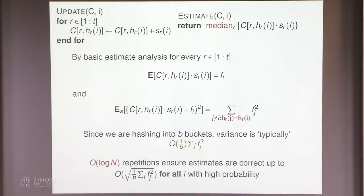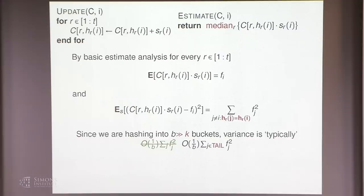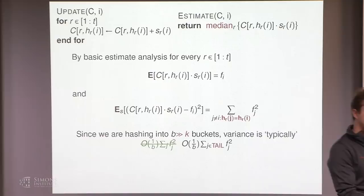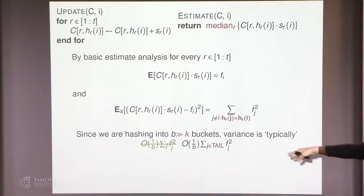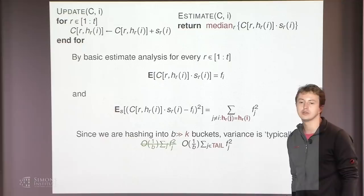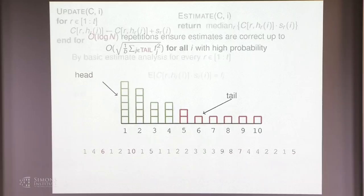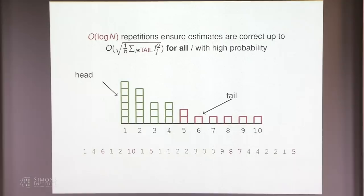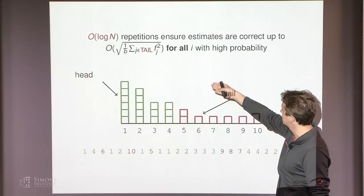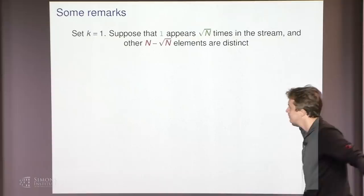In fact one can tighten the analysis: when hashing into more than k buckets, the variance is typically 1/b of the L2 squared norm of the tail, ignoring the top k coefficients, since most of the time item i doesn't hash to the same bucket as other head elements. So we have an algorithm that approximates the frequency of any element up to about 1/sqrt(k) of the L2 squared norm of the tail. This is the CountSketch algorithm.